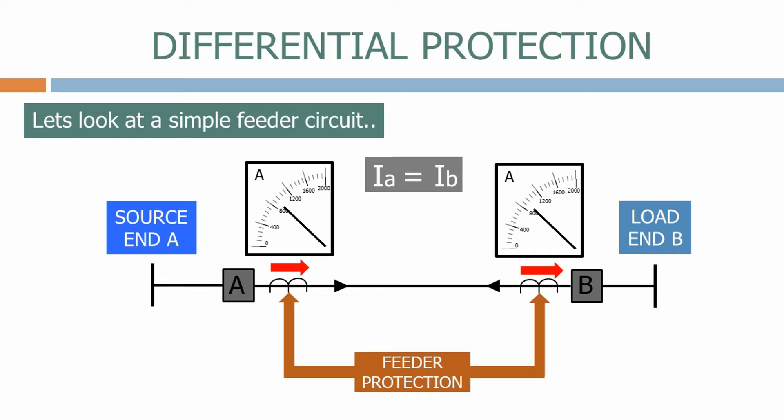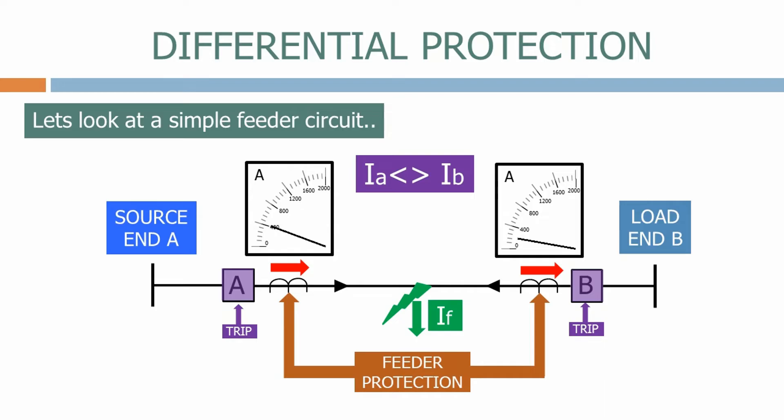Let's now apply a fault on the feeder. The current from the source at End A now increases substantially to feed the fault. The current at End B remains the same as it's still just feeding the loads connected to End B. There is now a large difference between the currents at ends A and B. The feeder protection immediately detects this condition and trips both circuit breakers, removing the fault from the electrical system.